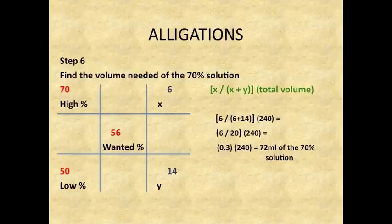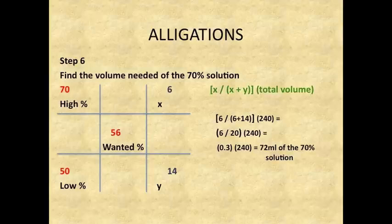Step 6: Find the volume needed of the 70 percent solution. Use the formula X divided by X plus Y, times the total volume. Replacing the values of X and Y: 6 divided by (6 plus 14) times 240 equals 6 over 20 times 240, which equals 0.3 times 240, which equals 72 ml of the 70 percent solution.